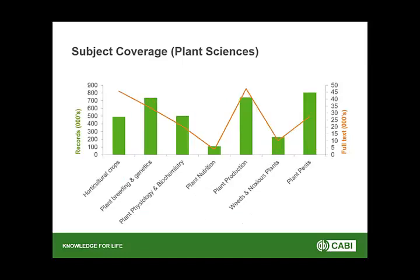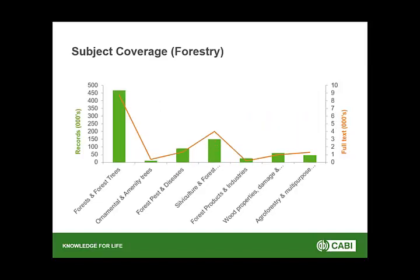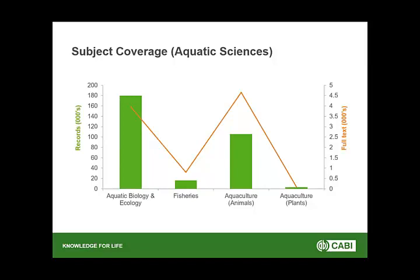Plant sciences covers plant pests, horticulture, plant nutrition, and production. Forestry has a range of sub-subjects with many records, journals, and abstracts. Aquatic sciences covers fishery and the aquatic world — animals and plants. Environmental sciences includes climate, climate change, biofuel, invasive species, water resources, and so on.